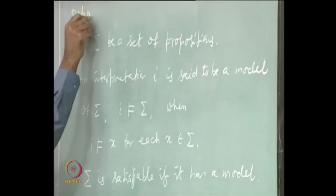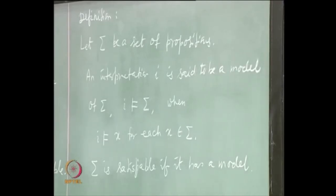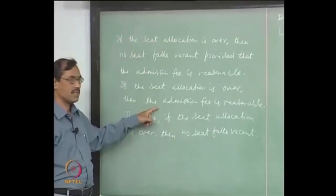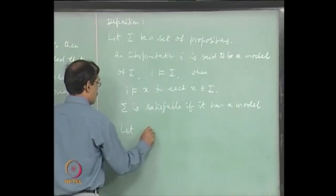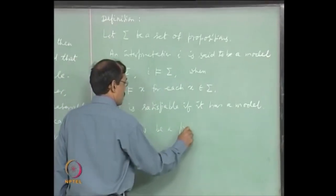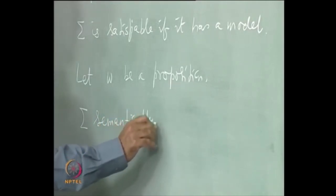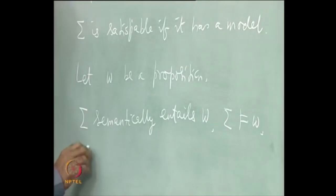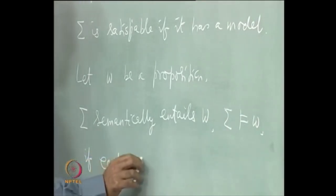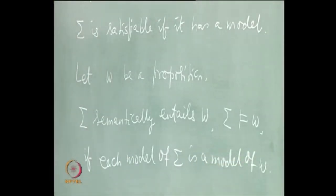When you have a set of premises and there is a conclusion, you need that a model of sigma should also be a model of the conclusion. We formalize this as follows, taking w to be any proposition — it may or may not be in sigma. We say that sigma semantically entails w, written as sigma entails w, if each model of sigma is also a model of w.